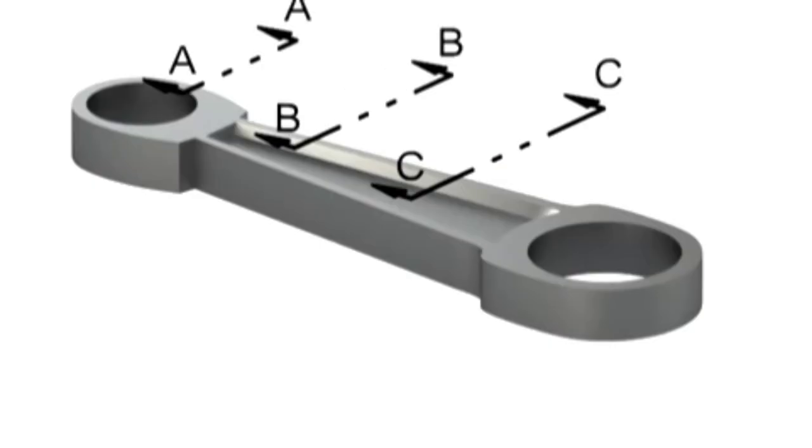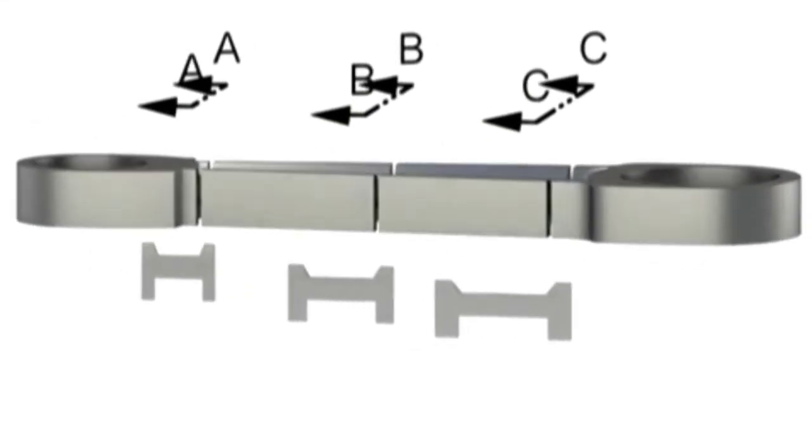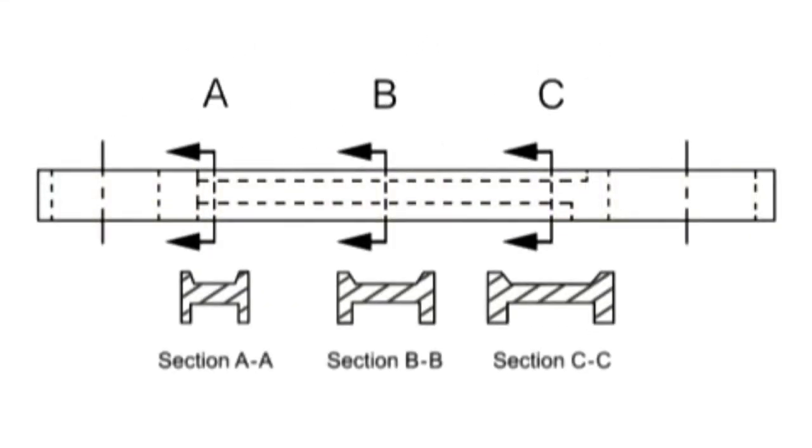Removed sections are actually revolved sections that are moved to another location on the drawing. Removed sections are used when a part, such as this connecting rod, changes in cross section from one point to another.